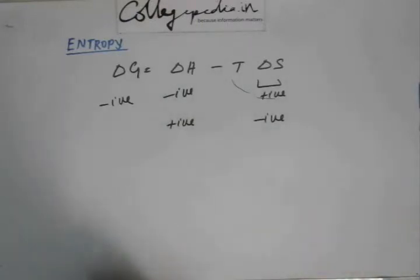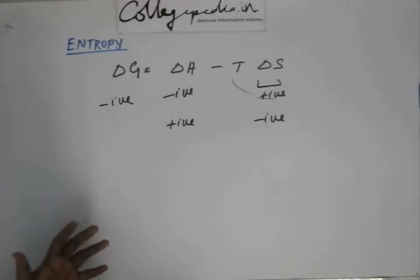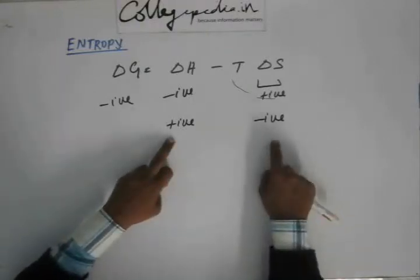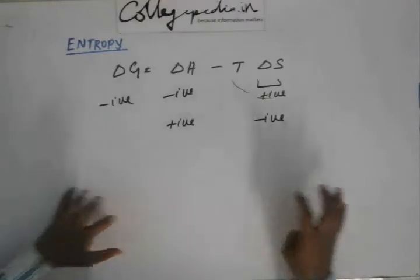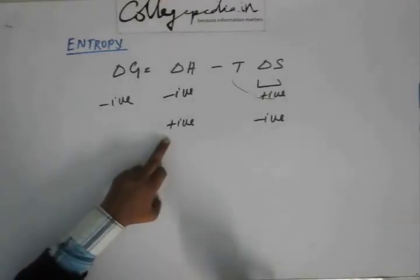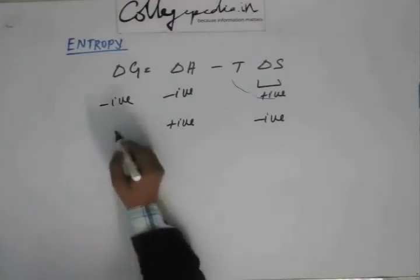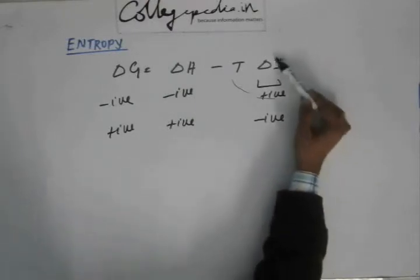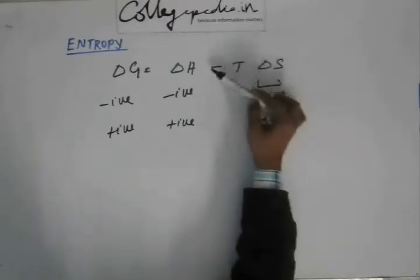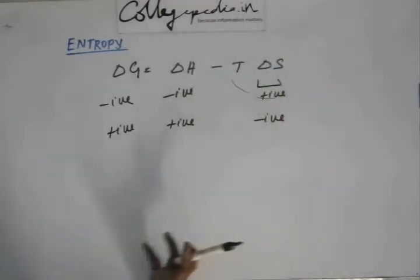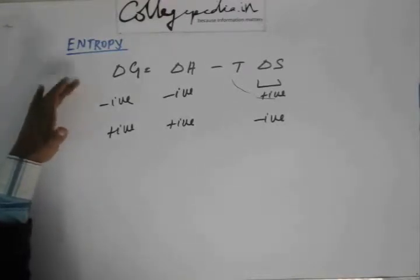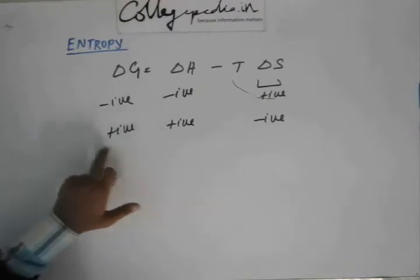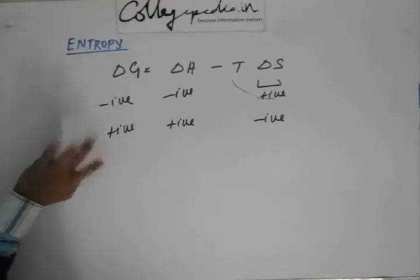For a reaction in which heat is given to the system and energy of the system is being increased — making the system unstable — plus the energy is being concentrated, both factors are unfavorable. Delta G is never going to be negative; it's always going to be positive. Mathematically, delta H is positive and delta S is negative with a minus sign, so the whole expression gives a positive delta G. Since delta G must be negative for spontaneity, this reaction is never spontaneous.